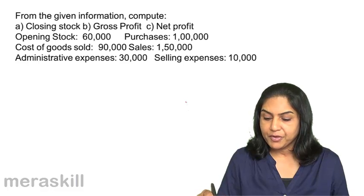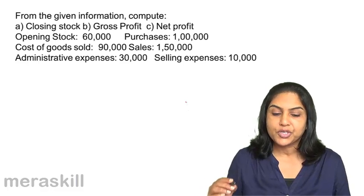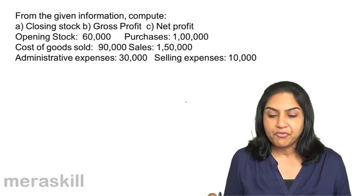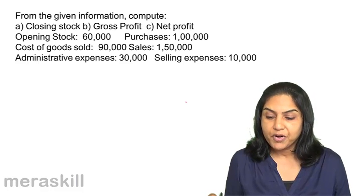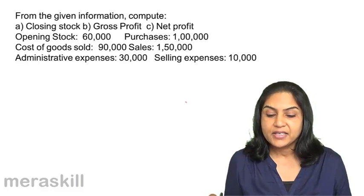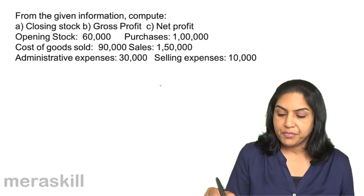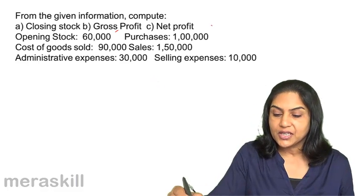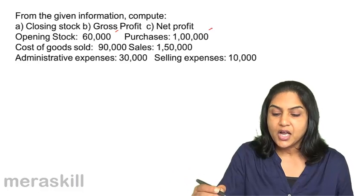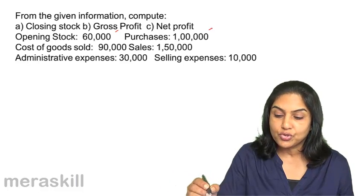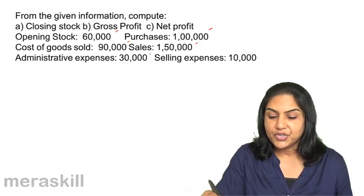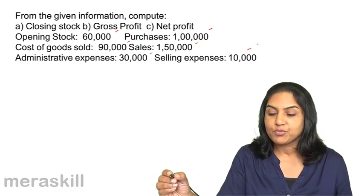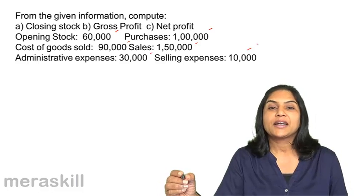Let us do a couple of computations. From the given information, compute closing stock, gross profit, and net profit. The information given is: opening stock 60,000, purchases 1,00,000, cost of goods sold 90,000, sales 1,50,000, administrative expense 30,000, and selling expense 10,000.